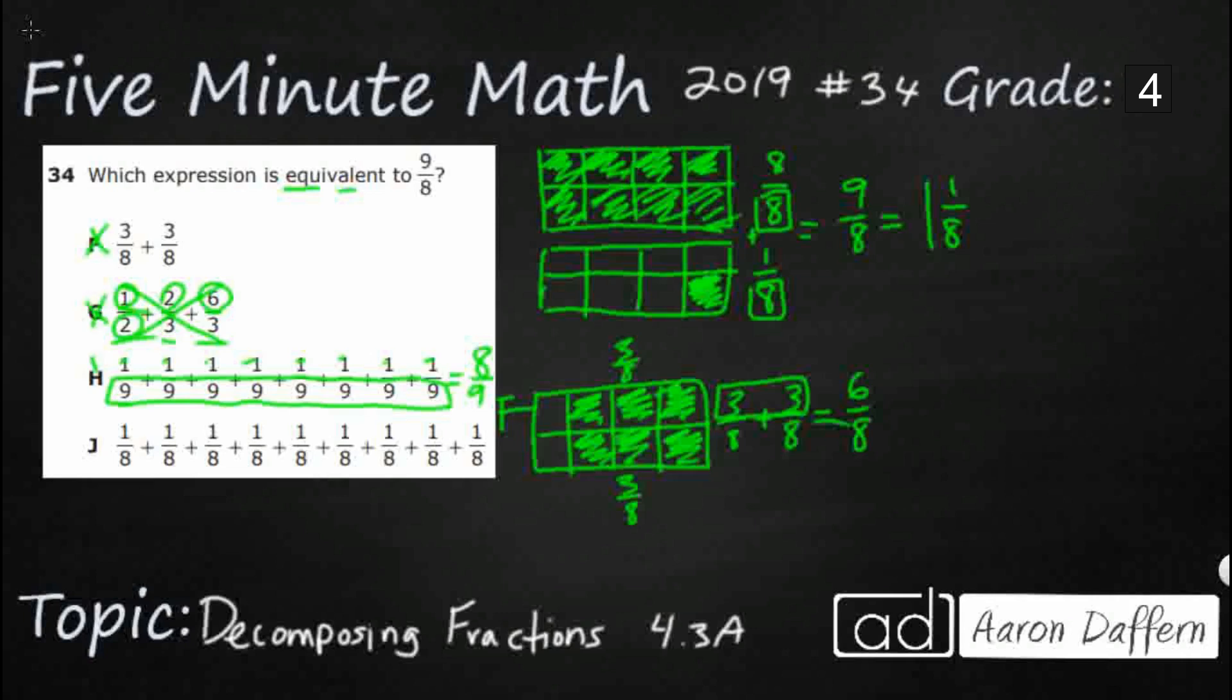So let us hope J is our answer. We've got eighths all the way across the bottom. So that's good. I'll put that right here. Let's count how many eighths. One, two, three, four, five, six, seven, eight, nine. We've got 9/8, which is exactly what we're looking for. That's going to be this right here. So our answer is J.